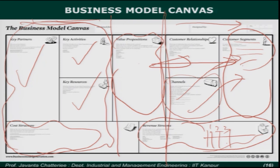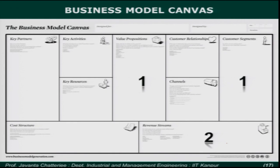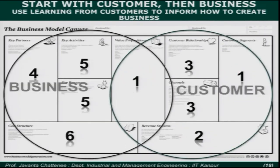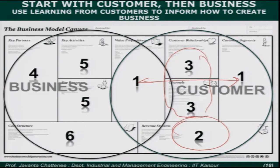This business model canvas, as you can see here — this is 1, this is the beginning of the journey. Next is 2, this is the revenue stream. Then this is 3 — what channel you are going to follow, construct, and use, and what customer relationship strategies you are going to follow.